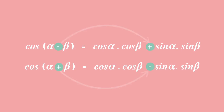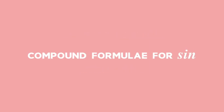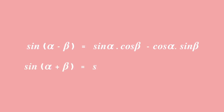Note that the original sign between the angles changes between the terms for the cos compound angle expansion. We can also prove using the distance formula and the cosine rule the following compound angle formulae for sin. Sin of (alpha minus beta) is equal to sin alpha times cos beta minus cos alpha times sin beta. And sin of (alpha plus beta) is equal to sin alpha times cos beta plus cos alpha times sin beta.